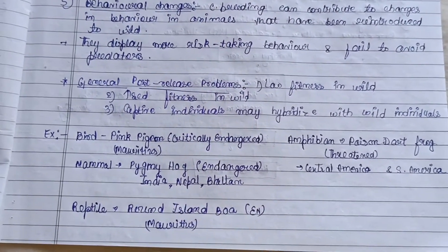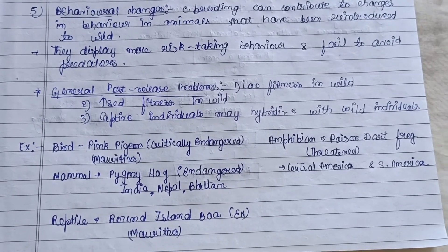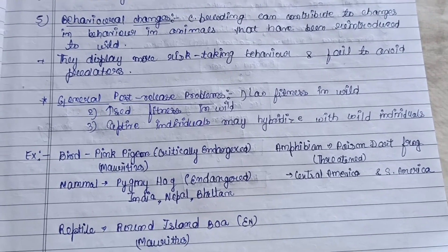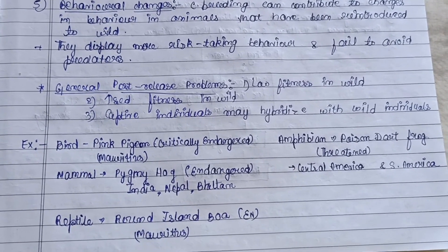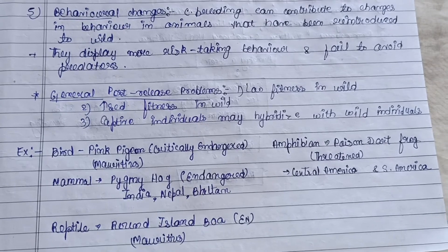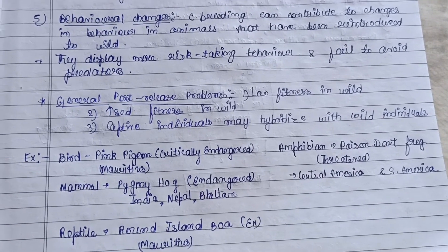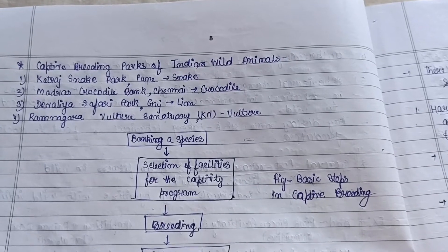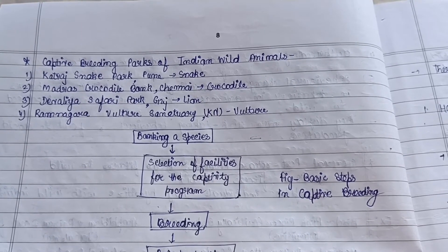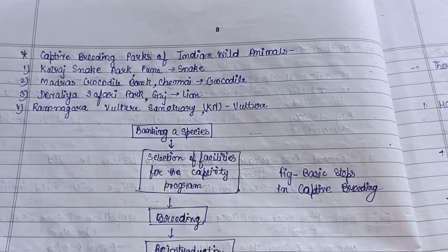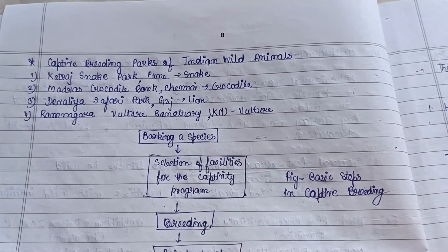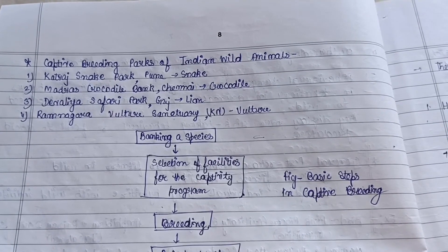Examples of animals used in captive breeding programs: in birds — pink pigeon (critically endangered); in mammals — pygmy hog (endangered); in reptiles — Round Island boa (endangered); in amphibians — poison dart frog (threatened). Captive breeding parks in India include Katraj Snake Park in Pune for snakes, Madras Crocodile Bank in Chennai for crocodiles, Devalia Safari Park in Gujarat for lions, and Ramnagar Vulture Sanctuary in Karnataka for vultures.